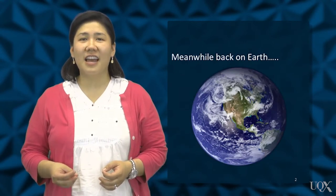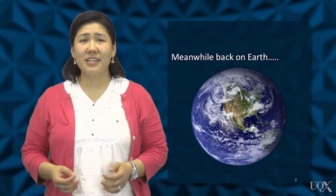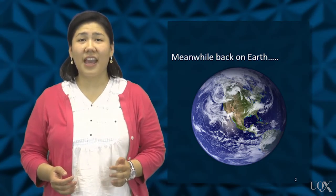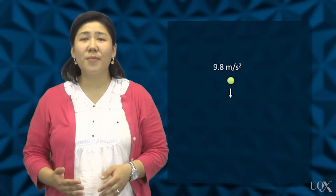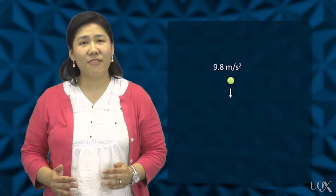Free falling objects are in a state of acceleration. Specifically, they are accelerating at a rate of 9.8 meters per second squared. This is to say that the velocity of a falling object is changing by 9.8 meters per second every second.